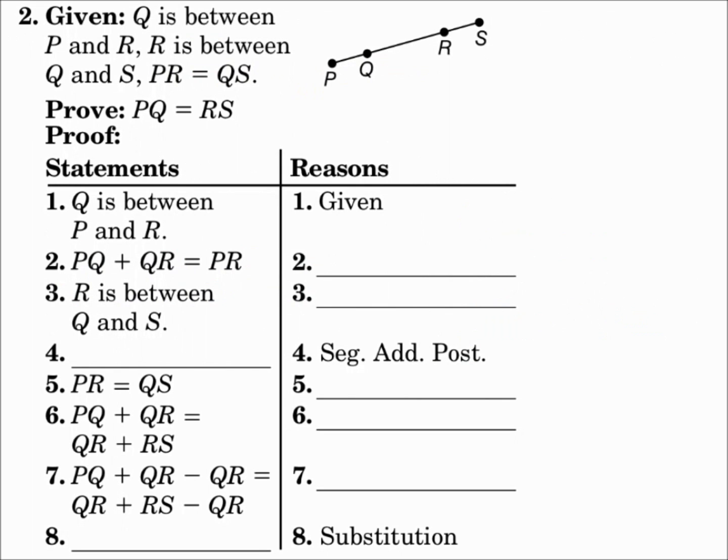Number 2. Given Q is between P and R, R is between Q and S, and PR equals QS. Prove that PQ equals RS. Notice we always start with what we're given. They give the first given piece, which is Q is between P and R, and the reason is given.